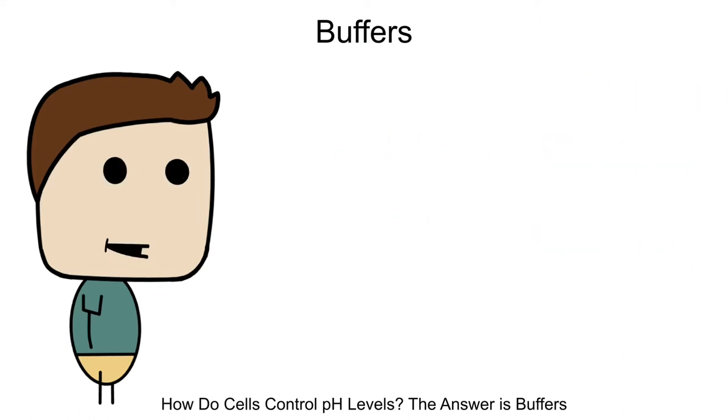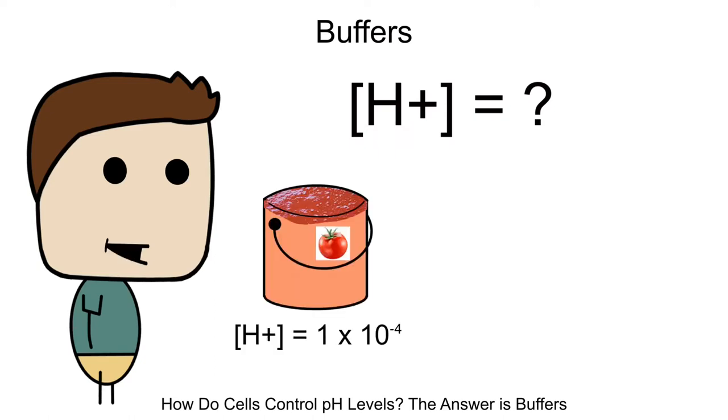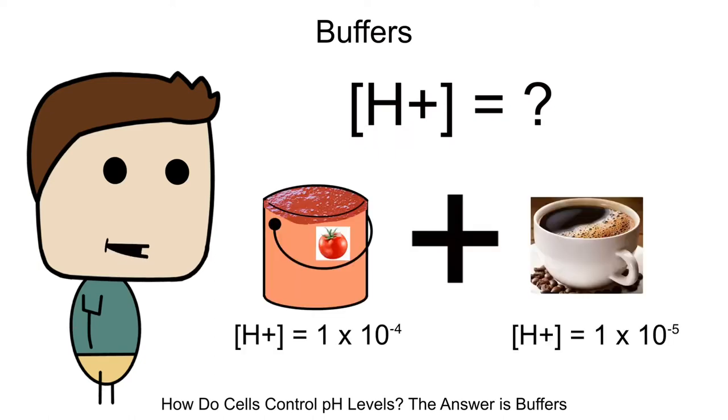Quick question, what happens to the H ion concentration if you have a bucket of tomato juice and you add coffee in it? Since coffee doesn't have as high of an H ion concentration present in it as tomatoes, mixing the two would most likely result in H ion concentration somewhere in between 10 to the negative 4 for tomatoes and 10 to the negative 5 for coffee.